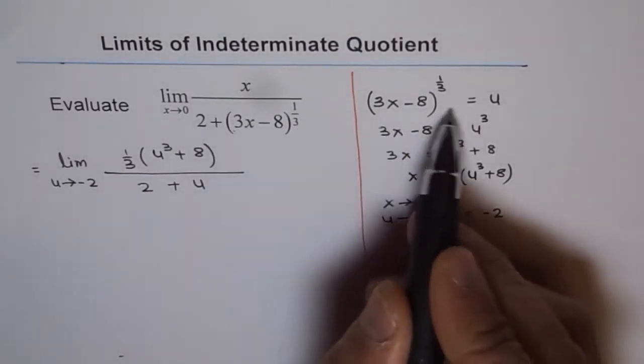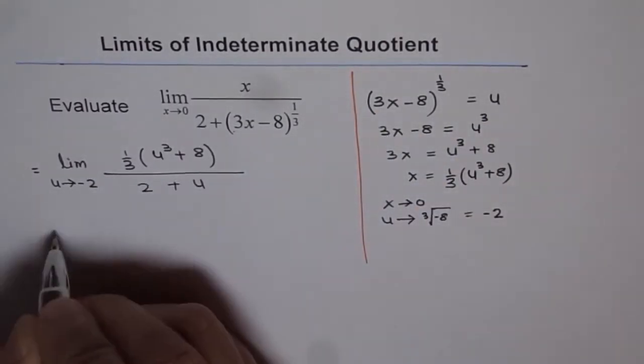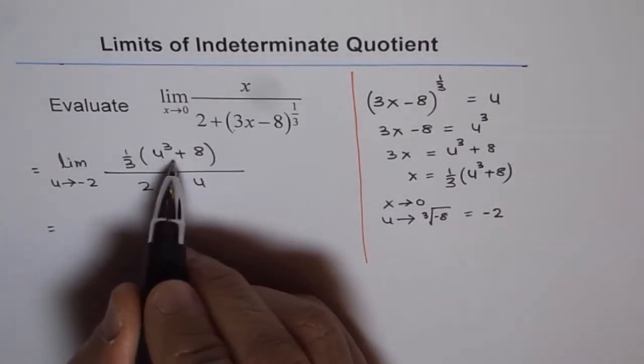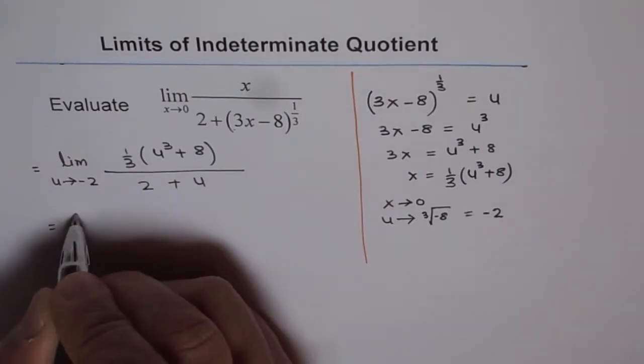Since this part is substituted as u. Now 8 is 2 cube. So we can expand it, rather factor it.